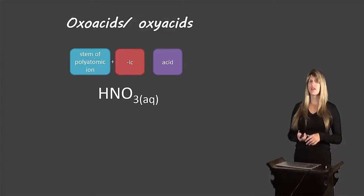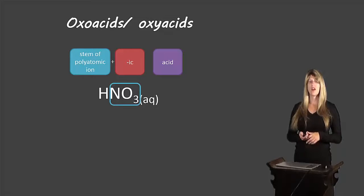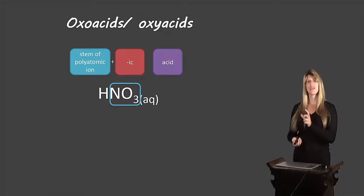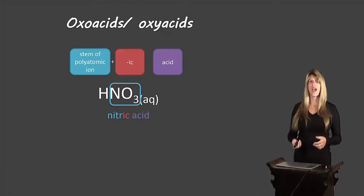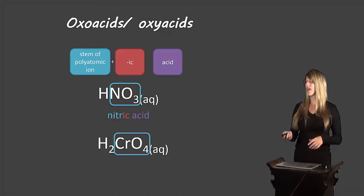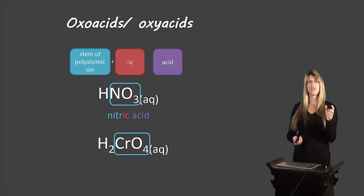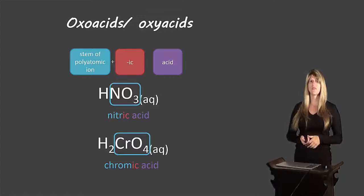For example, HNO3: we recognize NO3 as the polyatomic anion — that's nitrate. Take the stem of nitrate by removing '-ate,' leaving 'nitr,' then add '-ic': nitric acid. For H2CrO4: CrO4 is the polyatomic anion, called chromate. Remove the '-ate' ending, leaving 'chrom,' add '-ic': chromic acid.